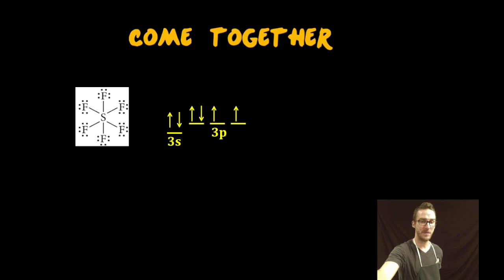However there is an empty 3d set of orbitals not much higher in energy away and so a couple of those electrons that are originally paired up can sort of scoot over to the empty 3d orbitals and allow for making up to six bonds.